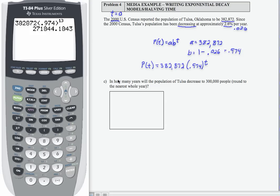Continuing this example, in Part C, we're asked: in how many years will the population of Tulsa decrease to 300,000 people? So I want to know in how many years, so that's going to be time, that's T, will the population of Tulsa decrease to 300,000 people?